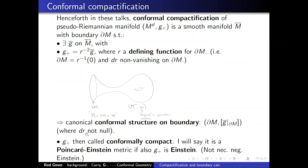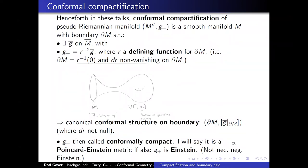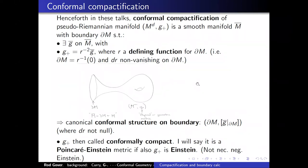I'm restricting to the case where DR is not null. And G-plus is called Poincaré-Einstein if it is additionally Einstein — some people would say negative Einstein in Riemannian signature, but I'll use that terminology.